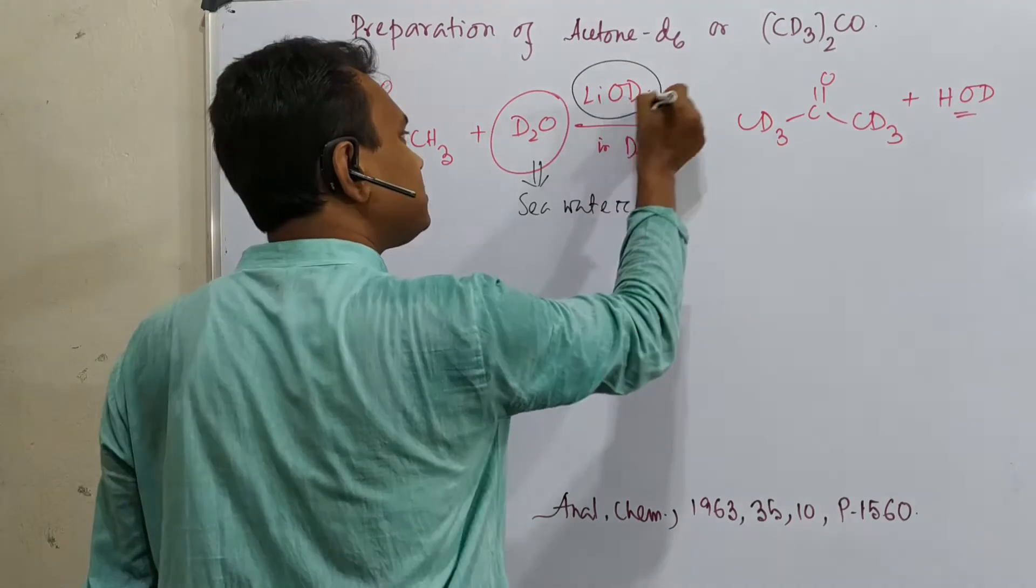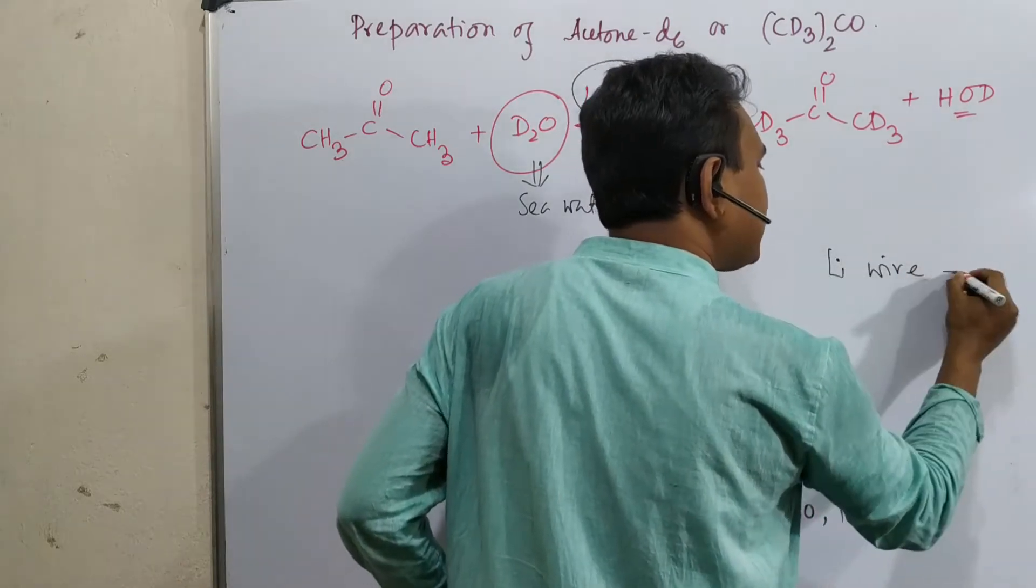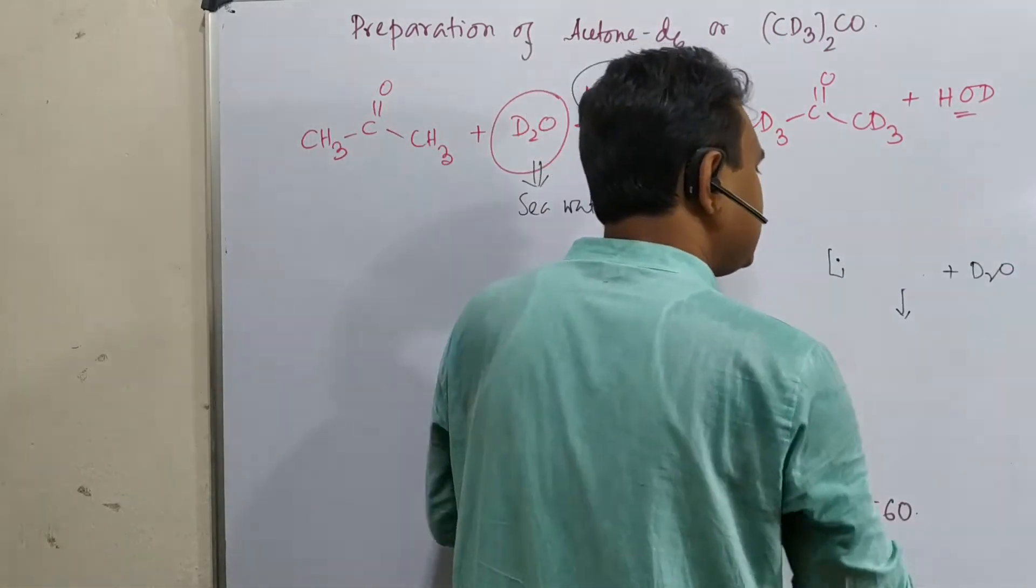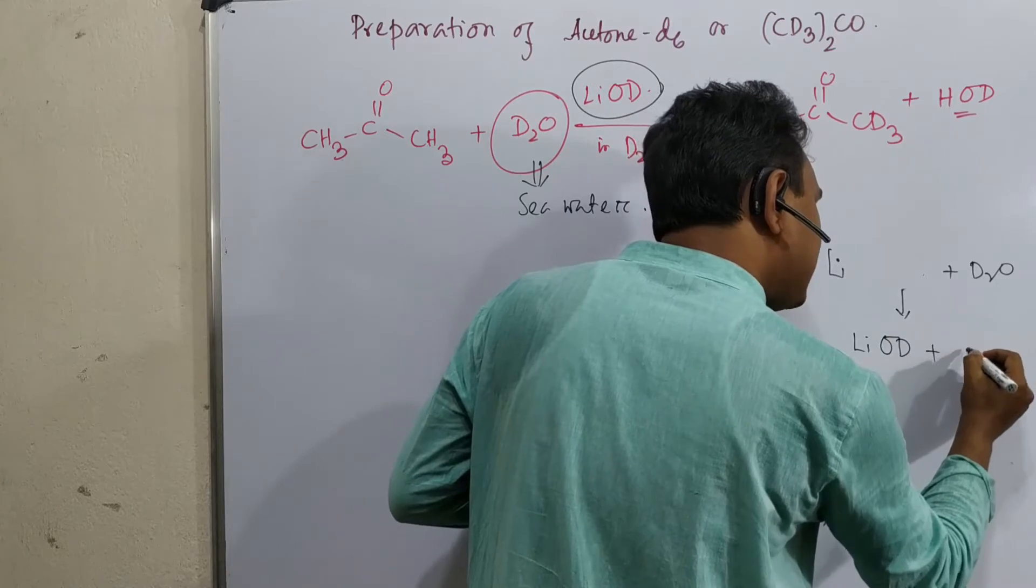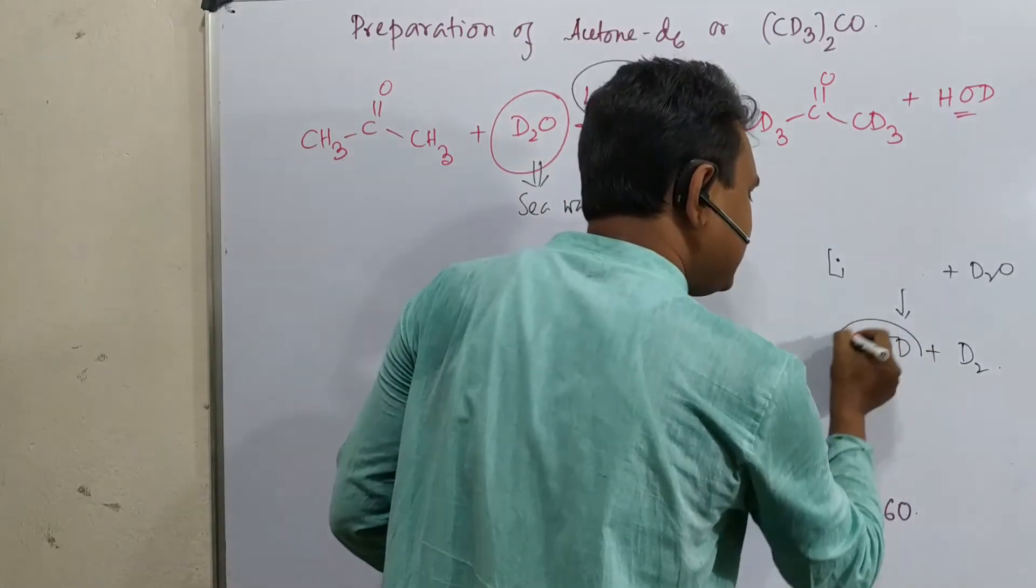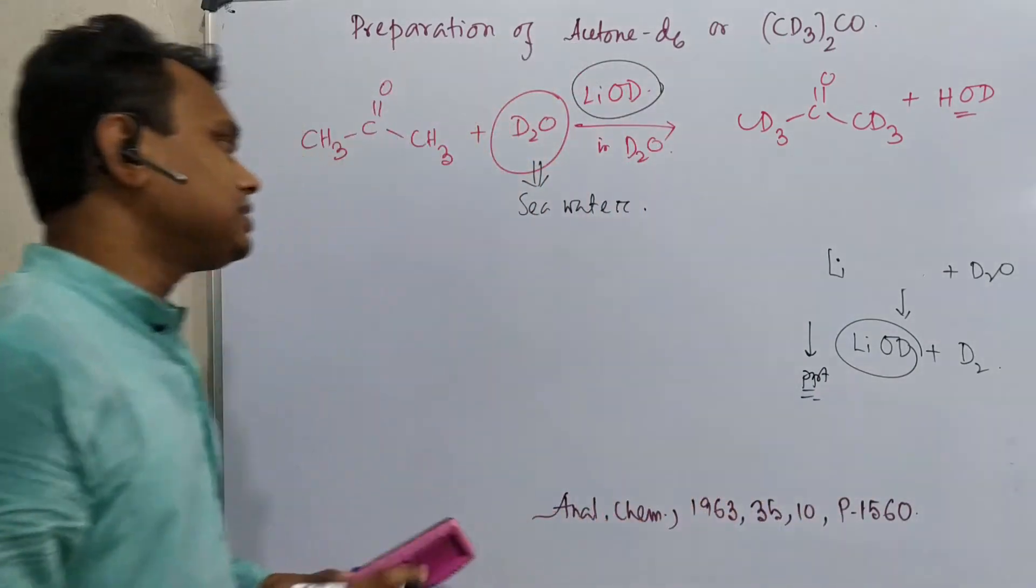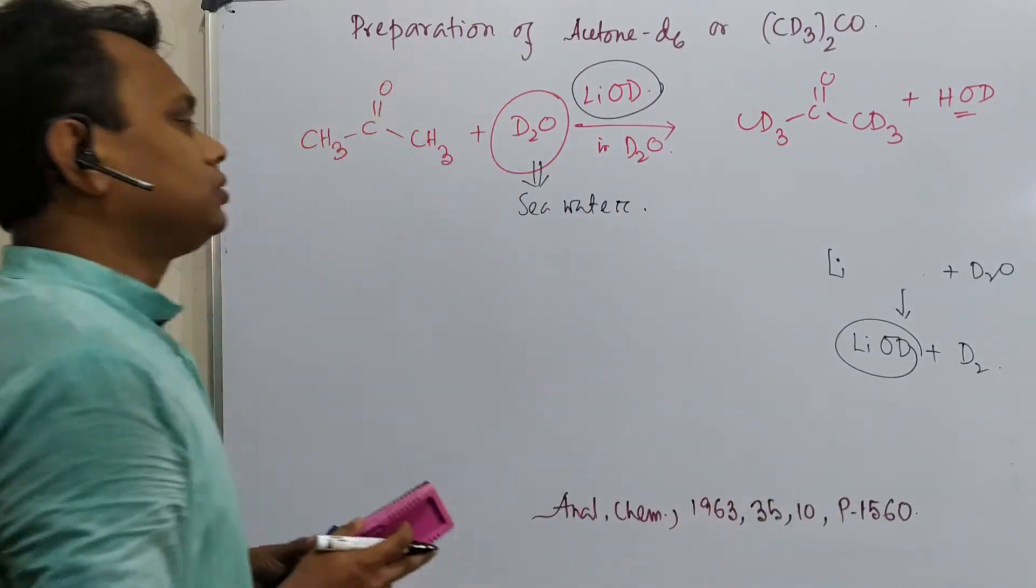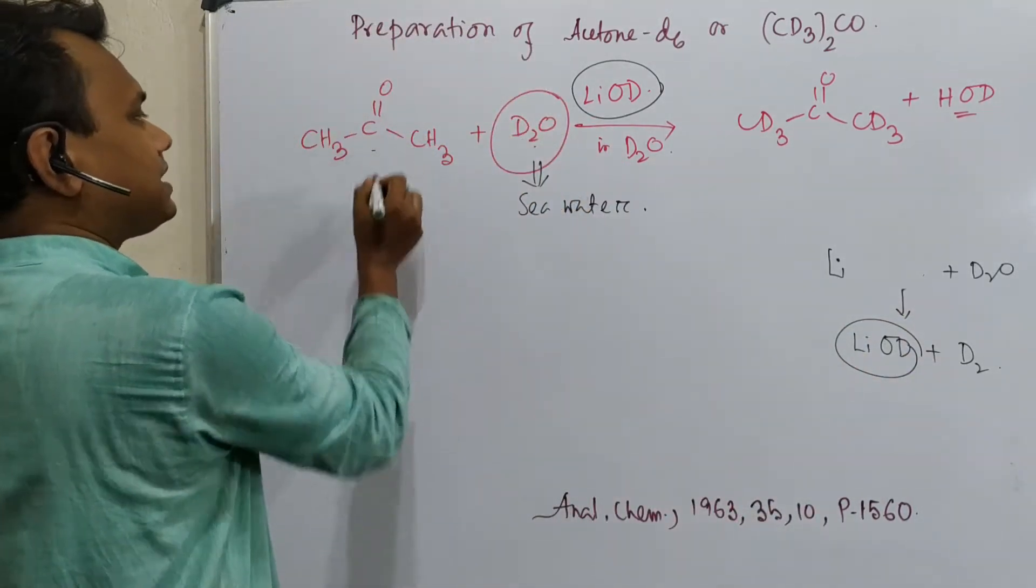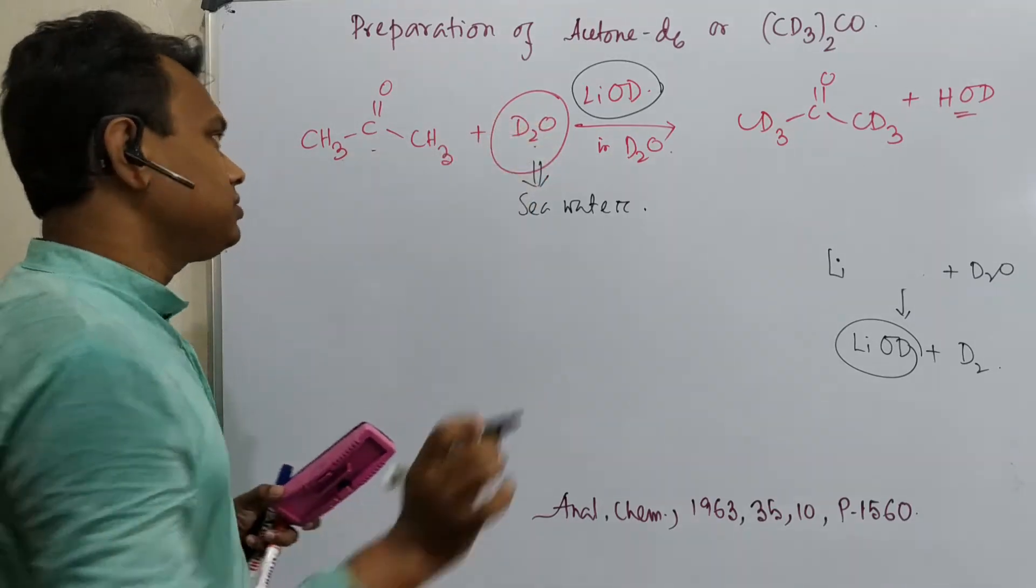Now, how is lithium deuteroxide prepared? This lithium deuteroxide is prepared using lithium wire plus deuterium D2O. It reacts with D2O and ultimately produces lithium OD plus D2. Why lithium? An interesting point is that it creates a DPT. Lithium deuteroxide solution is taken along with D2O and acetone. Remember, acetone is highly miscible with water, so no issue of phase change between organic and inorganic molecules.